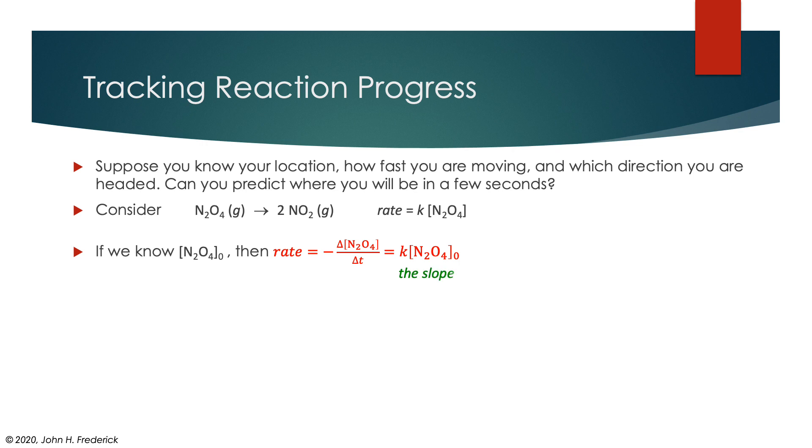In other words, this is something that I can actually calculate. This thing k times the concentration tells me the slope of the change at that point. So what I know is I know where I am, I know the concentration at time zero, and I know how fast I'm going somewhere else and what direction I'm headed.